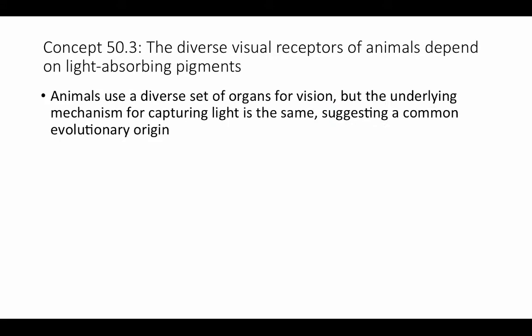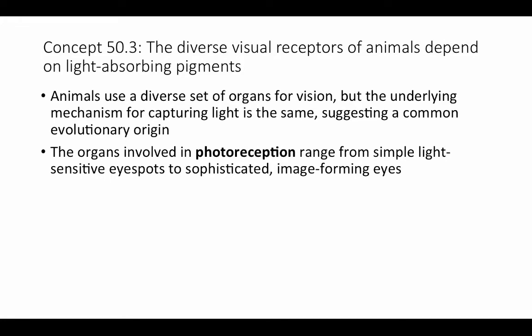Let's first start to think about photoreception and vision. Animals use a diverse set of different kinds of organs for vision and light reception, but the underlying mechanism for capturing light is pretty much the same, which suggests a common evolutionary origin for these different light-sensing organs. The organs involved in photoreception range from very simple pigment spots called eye spots that can detect light, all the way up to very sophisticated image-forming eyes that can detect very fine distinctions in images.